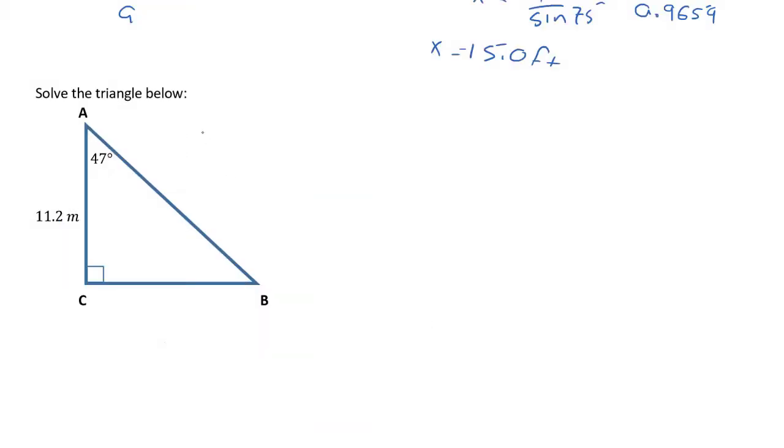All right, let's take a look at the second question. In the second question, we're asked to solve the triangle below. And when we're asked to solve a triangle, that means we need to calculate all of the unknown information. So we don't know angle B, which I'll write in as B. We don't know side CB, and I'll represent that by x. And we also don't know the length of side AB, and I'll let that be represented by y.